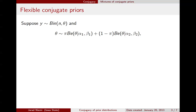This notation says that theta, our parameter of interest, has a prior with probability pi of coming from a beta distribution with hyperparameters alpha 1 and beta 1, and a 1 minus pi probability of coming from a different beta distribution with hyperparameters alpha 2 and beta 2. This is a two-component mixture, the two components being these two beta distributions, with mixing probability pi.